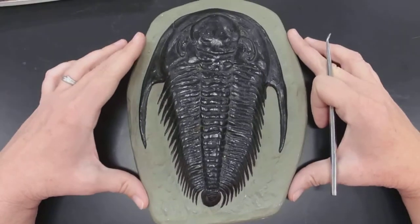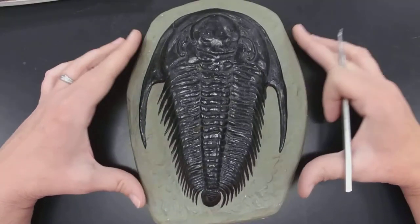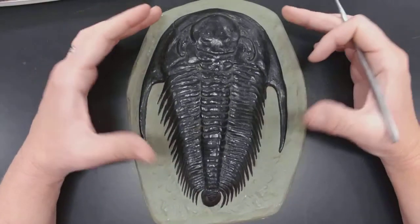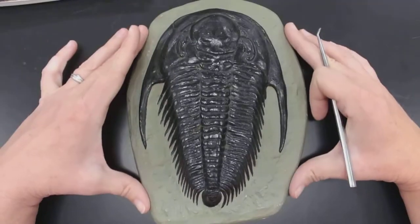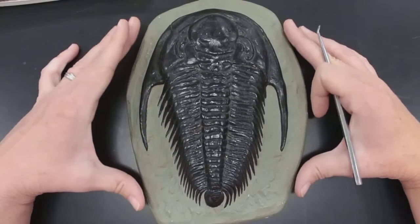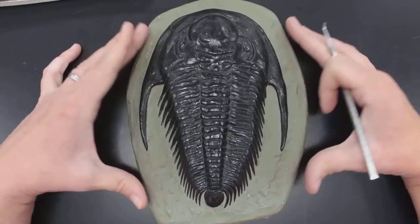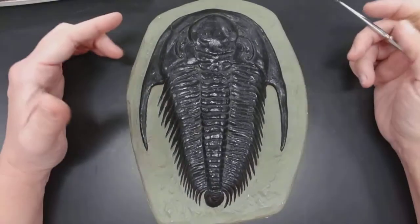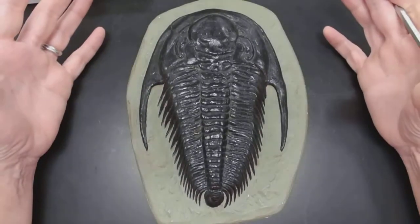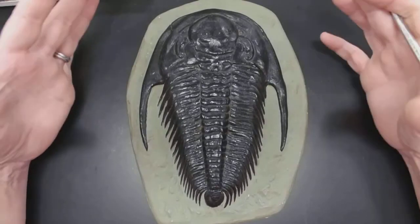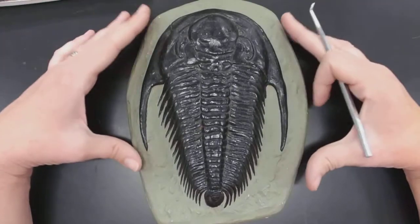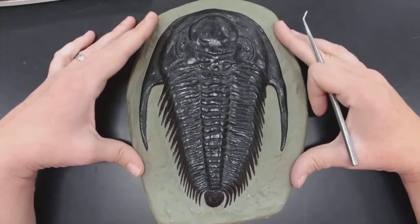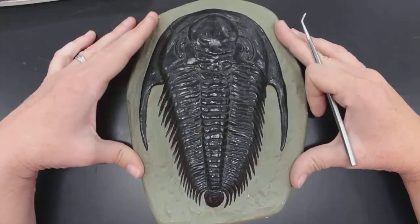We're going to go over the trilobite today. This looks very much like a model of a trilobite. Trilobites are extinct, but we have tons of their fossil evidence. Let's go over the parts of the trilobite first.